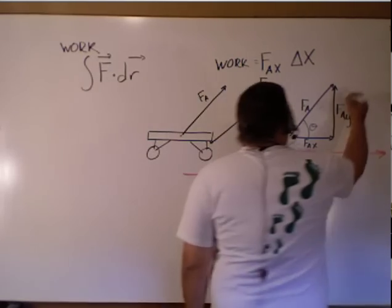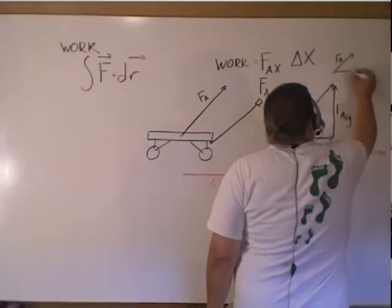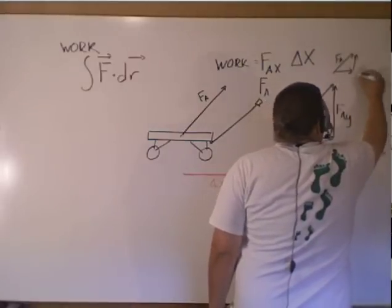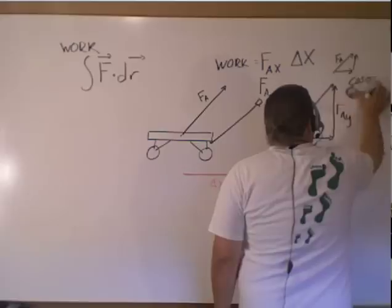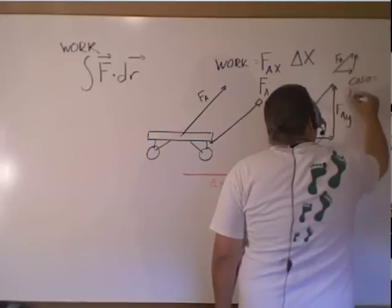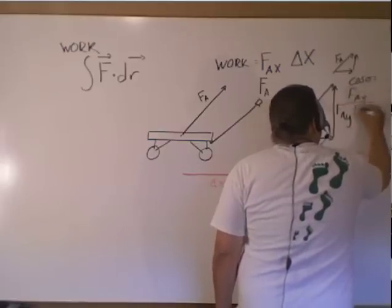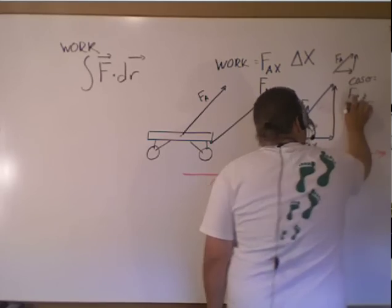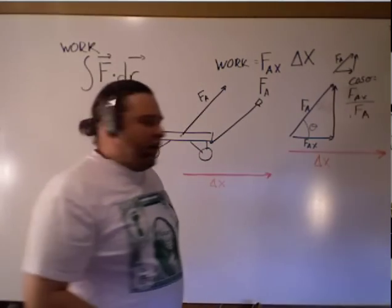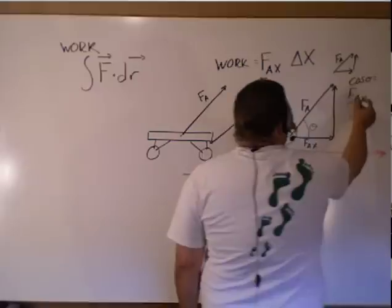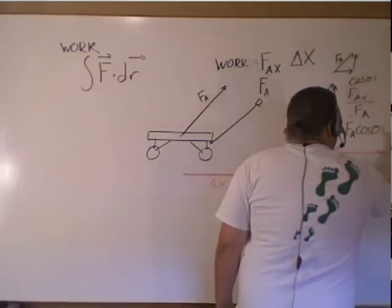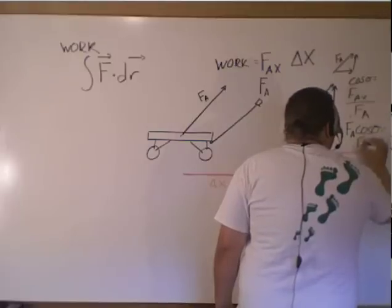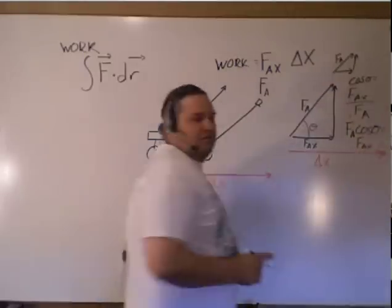It turns out that looking at that triangle FA here, that cosine theta is equal to FAx over FA. And then move FA over to the other side, and I get FA cosine theta is equal to FAx.